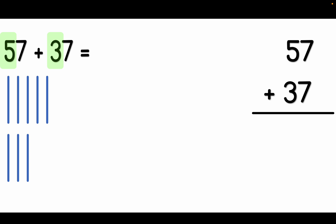Let's focus on the ones now. In 57, I have seven ones: 1, 2, 3, 4, 5, 6, 7. I also have seven ones in 37: 1, 2, 3, 4, 5, 6, 7.